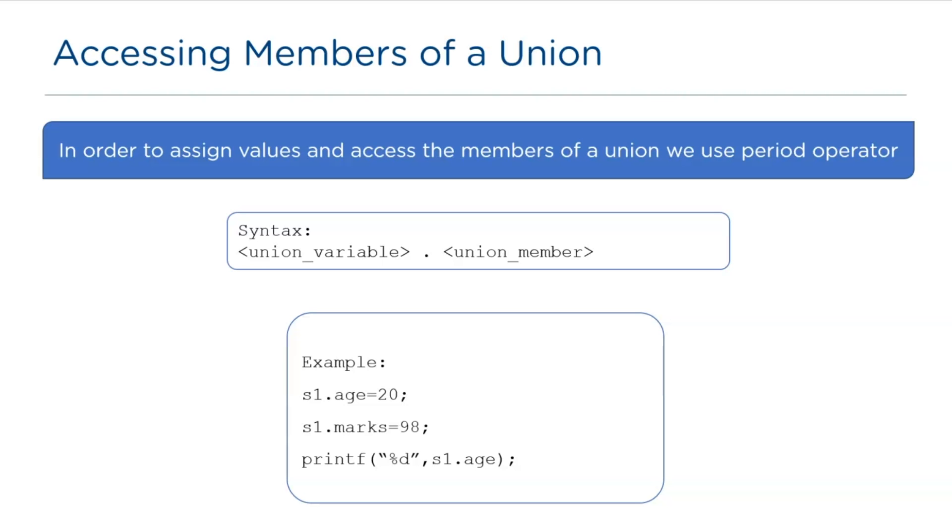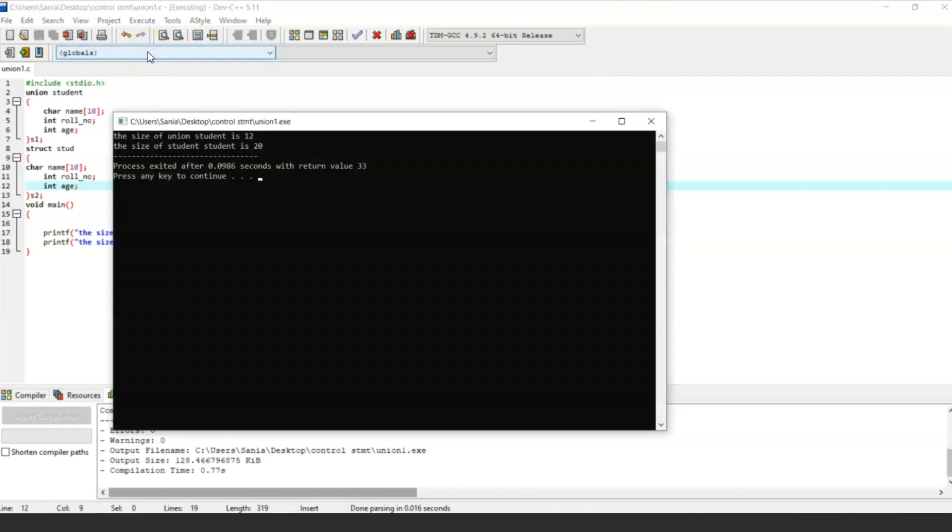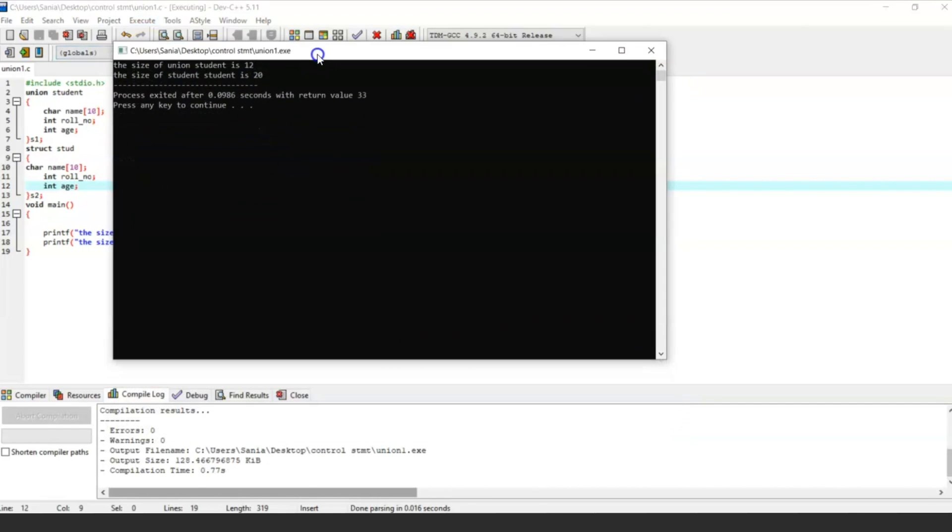Now, let's execute a simple program. From this program, we are going to find the difference between structure and union in terms of size. We have same list of members in both structure and union. So, we are going to find the size it's occupying in the memory. Now, let's run it. As you can see, the name in union occupy the largest memory. So, the total size of union student is 12 and structure occupies the size 20. I hope it's clear.